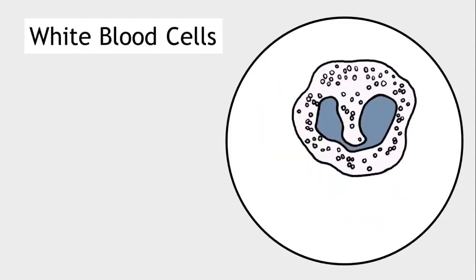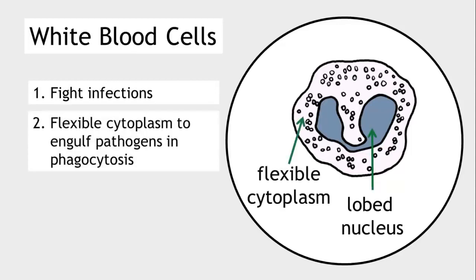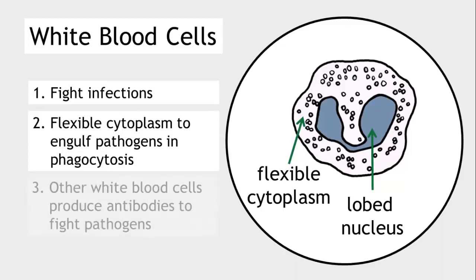Finally, white blood cells enable us to fight infections. They can be identified by the characteristic lobed nucleus. White blood cells have a flexible cytoplasm so that they can engulf pathogens in a process called phagocytosis. Some other white blood cells are specialised to produce antibodies, and it's these antibodies that fight pathogens.